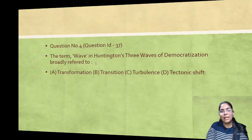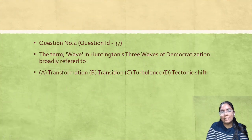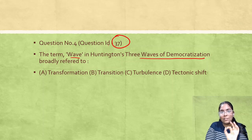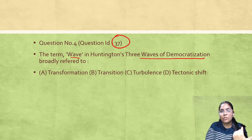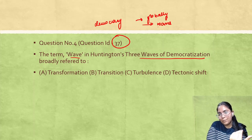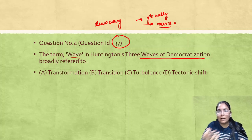Moving on to question ID 37, question number 4: The three waves of democratization — what does the word 'wave' mean here? We completed this chapter recently. It refers to democratic transition and consolidation. Whenever democracy developed globally, it happened in waves — meaning many countries went through this process at the same time. It was not random.